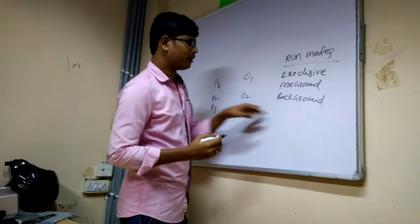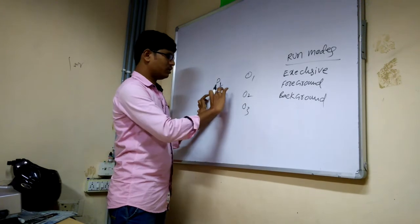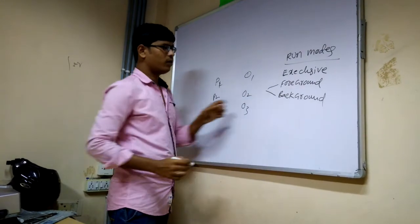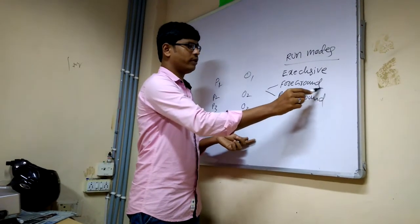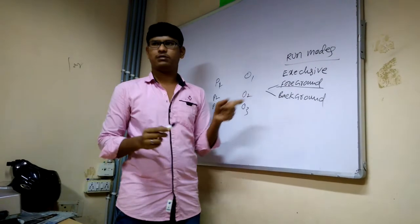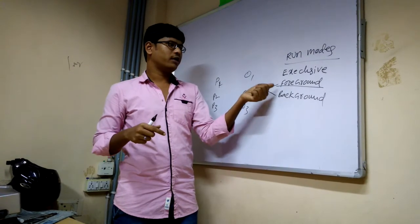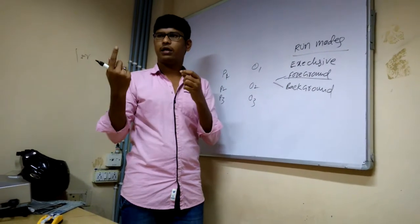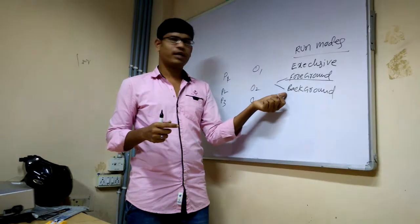This is also actually, these are very similar, foreground and background. What is the difference? The difference is, we are able to see the process. In console, we are seeing that process, any object or any process, we are able to see. So in background, we are not able to see.